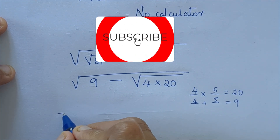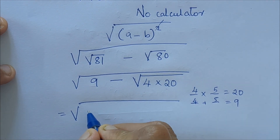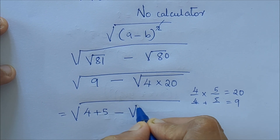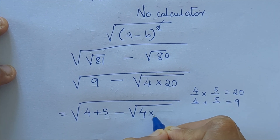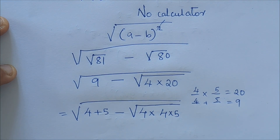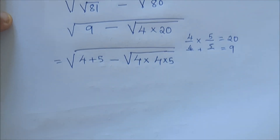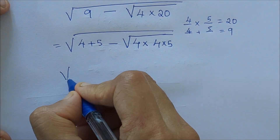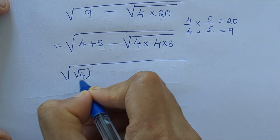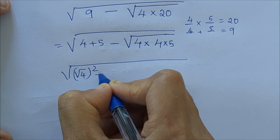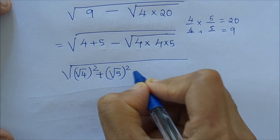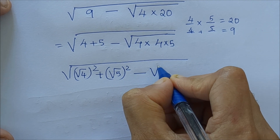So that is equal to root of (4 plus 5 minus root of 4 times 4 times 5), which gives us root of (root 4 all squared plus root 5 all squared minus 2 times root 4 times root 5).